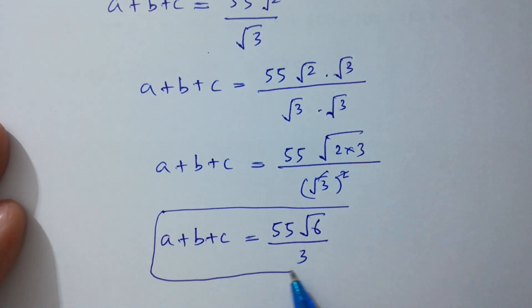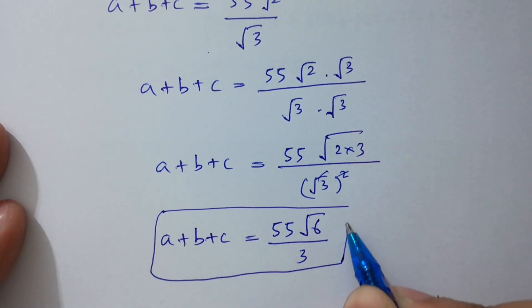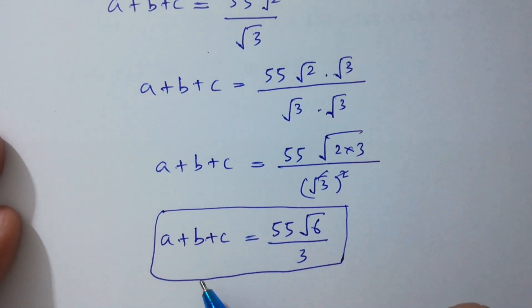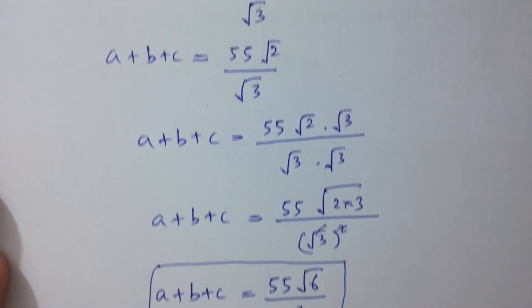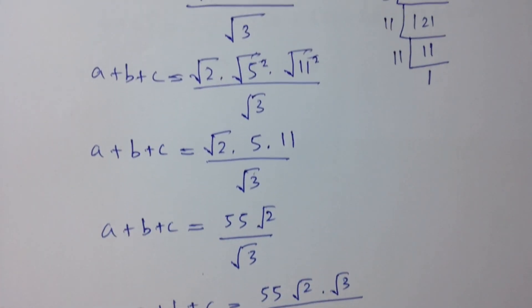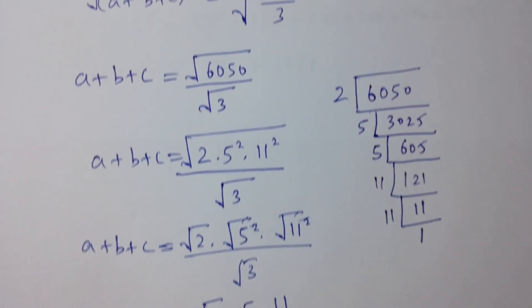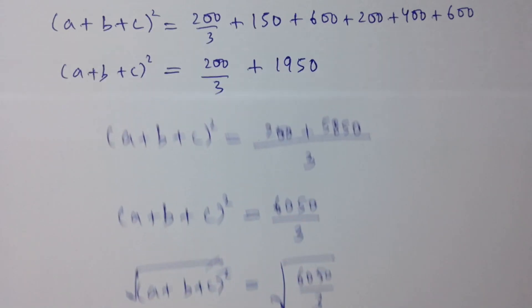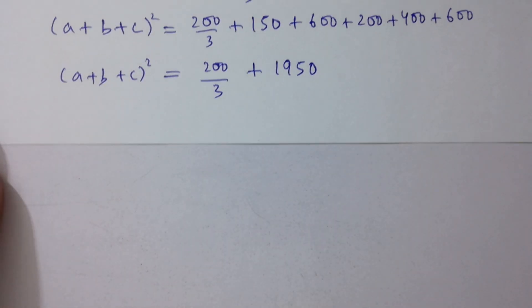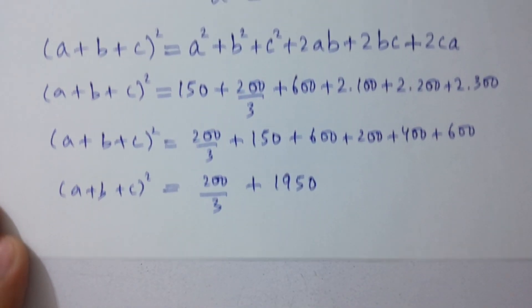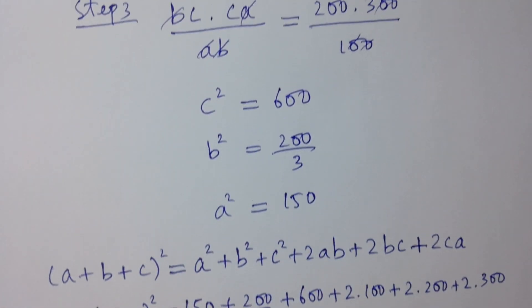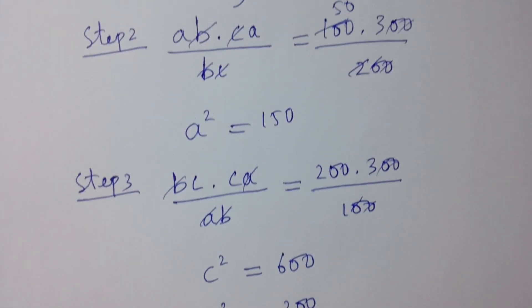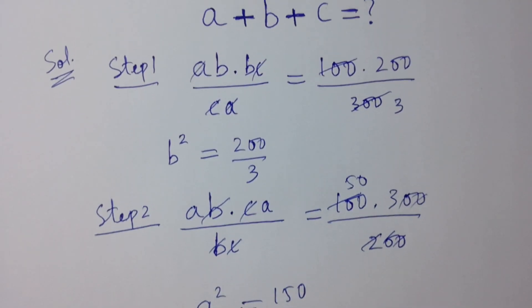So the final answer is a + b + c = 55√6 / 3. Thanks for watching this video. Please subscribe to this channel to get notifications of new videos, and don't forget to share these videos with your classmates and friends so that they also benefit from it. Bye!